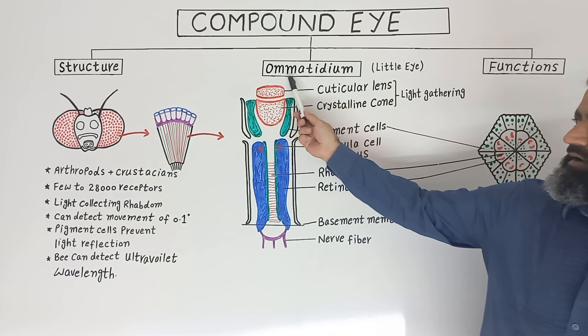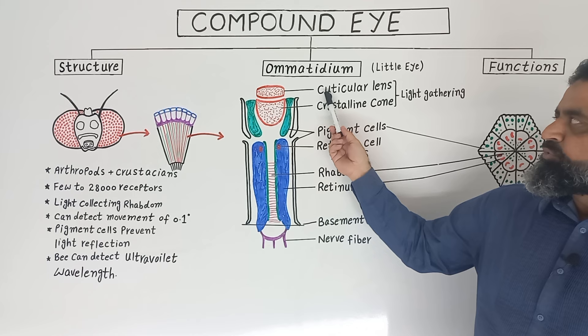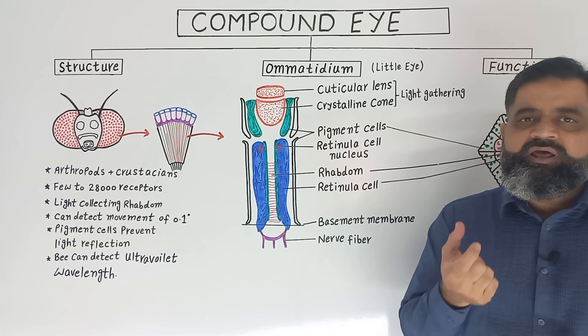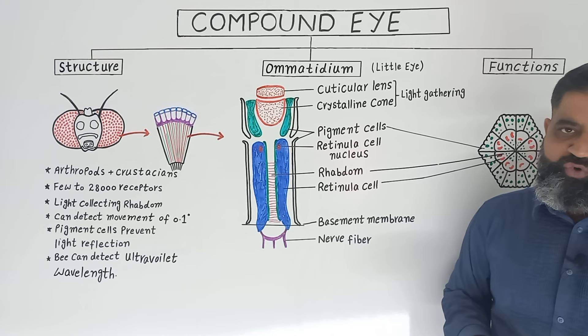To understand the anatomy of an ommatidium, I have taken a single ommatidium. In the diagram you can see a single ommatidium — the little eye of the compound eye of an insect. On the outermost surface it is composed of a cuticular lens, which acts like a cornea and allows light to enter into the eye. Just below the cuticular lens there is a cup-shaped structure known as the crystalline cone.